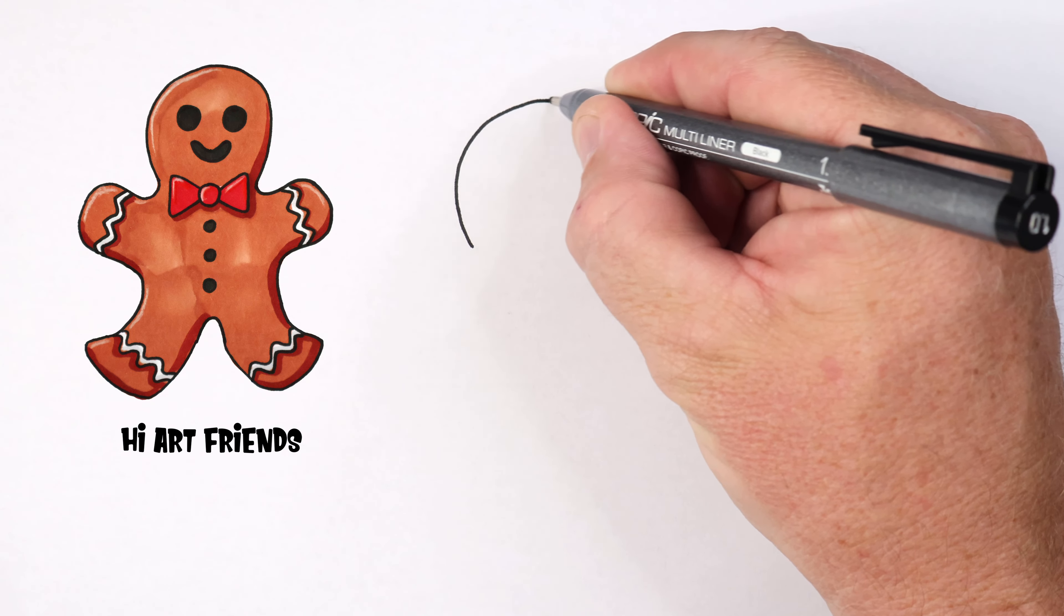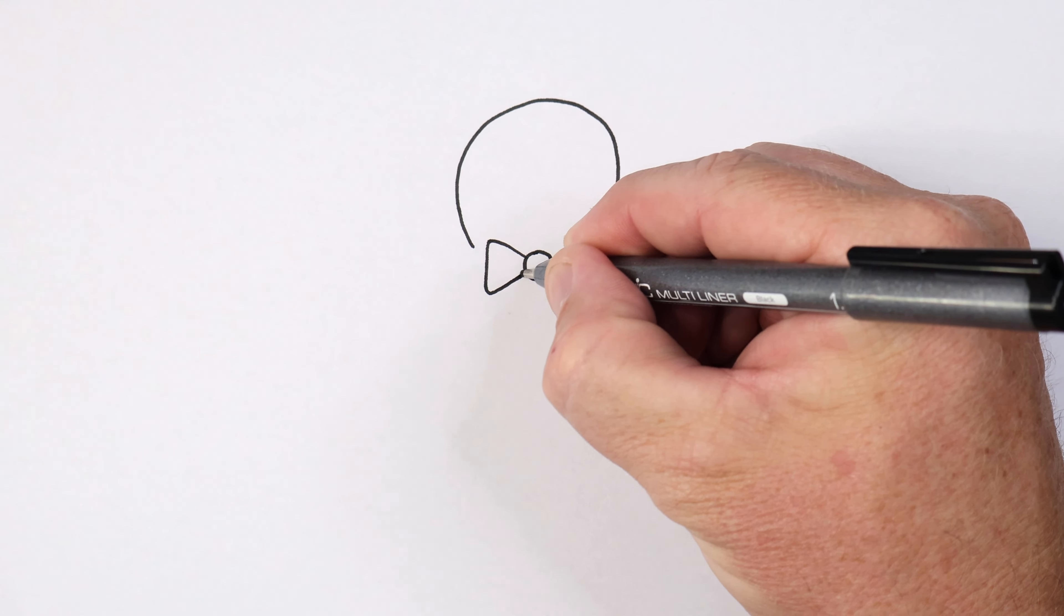So big curve line like so. Now just inside of here I'm going to put a circle. This is going to be the bow tie, a little rounded triangle like so. We're going to match the same on the other side.